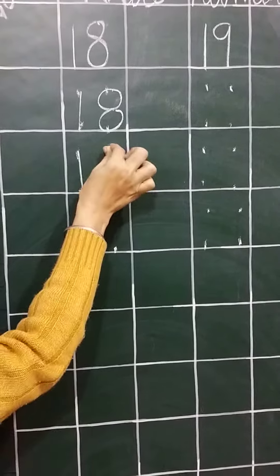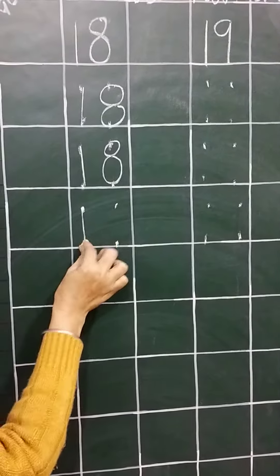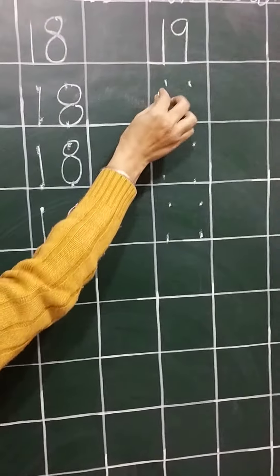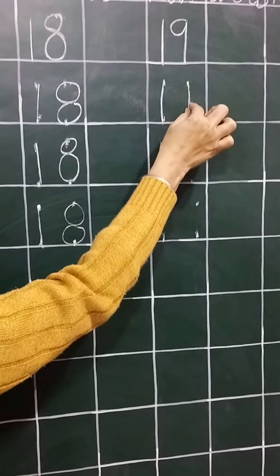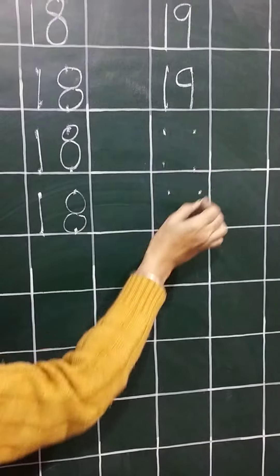1, 8, 18. After that number 19. Again standing line, again standing line, then curve. Okay beta?